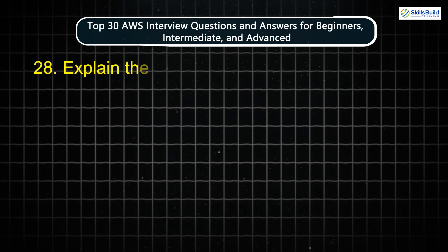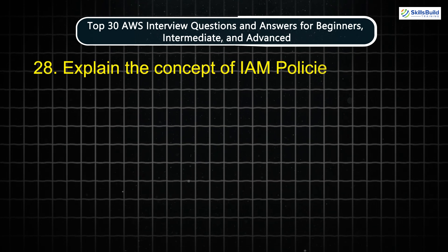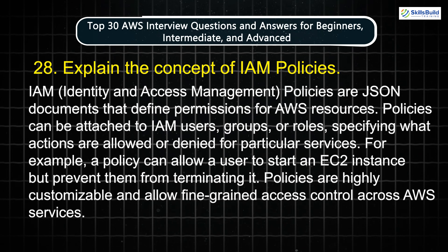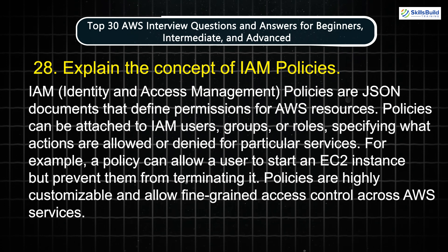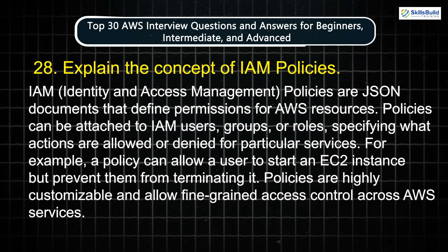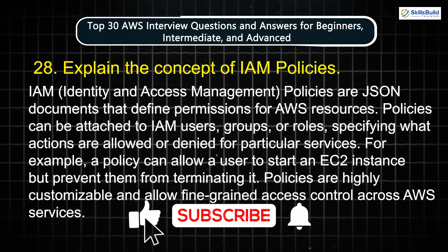Question 28: Explain the concept of IAM policies. IAM policies are JSON documents that define permissions for AWS resources. Policies can be attached to IAM users, groups, or roles, specifying what actions are allowed or denied for particular services. For example, a policy can allow a user to start an EC2 instance but prevent them from terminating it. Policies are highly customizable and allow fine-grained access control across AWS services.